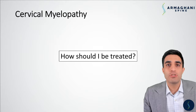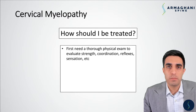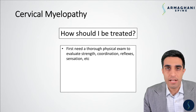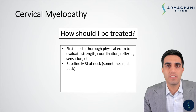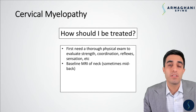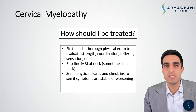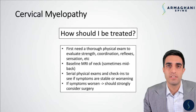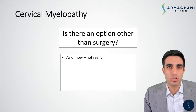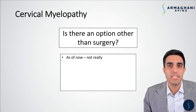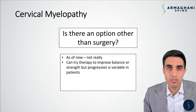How should you be treated if you have signs or symptoms of early cervical myelopathy? The first step should be getting a thorough physical exam to look at your strength, coordination, and reflexes. We would like to have a baseline MRI of the neck to see the extent of compression and the amount of areas involved — occasionally this can involve the mid-back as well, because the spinal cord extends from the base of the skull to the bottom of your rib cage. Serial physical exams or check-ins should be done from time to time to figure out if symptoms are stable or worsening. If symptoms worsen over time, especially quickly, surgical treatment should be strongly considered. As of right now, unfortunately, there is no real alternative to surgery — this is an architectural or structural problem; there is simply not enough space for the spinal cord. Patients can certainly try therapy to work on their balance or coordination, but the progression of cervical myelopathy cannot be changed with these measures.